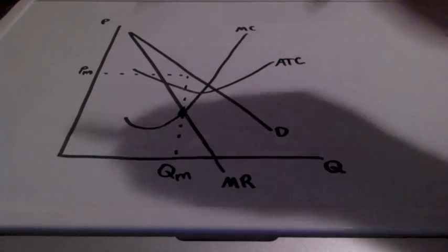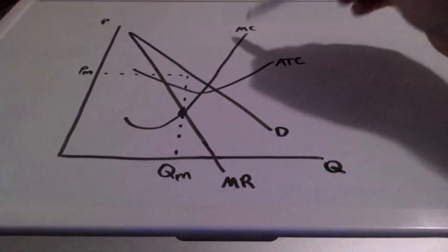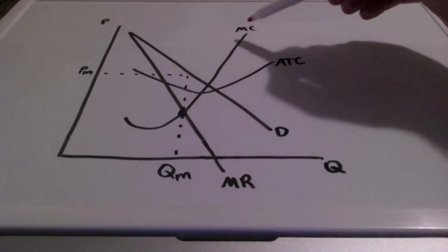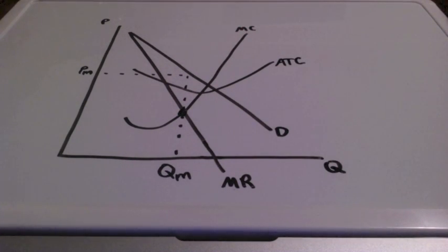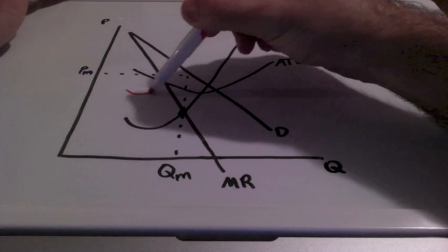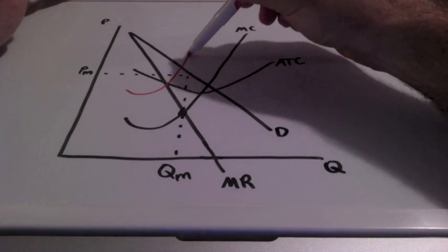Now remember, the marginal cost curve is the firm's supply curve. And whenever we have a tax imposed, we have a leftward shift in the supply curve. So, since the marginal cost curve represents the firm's supply curve, marginal cost is going to shift to the left.